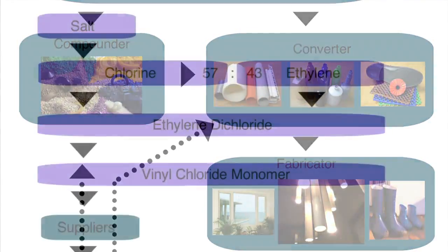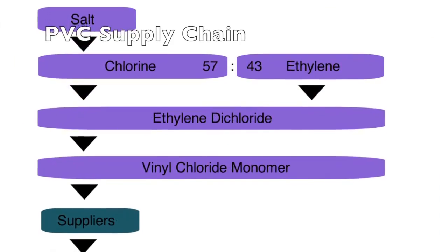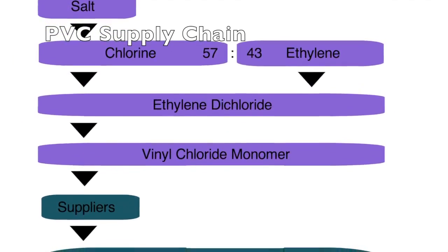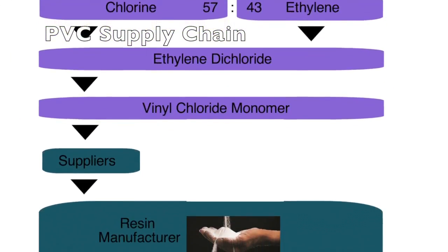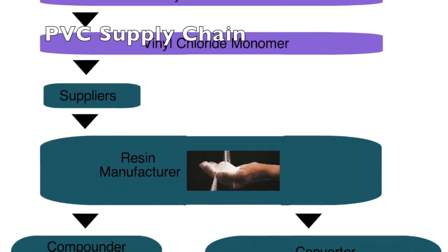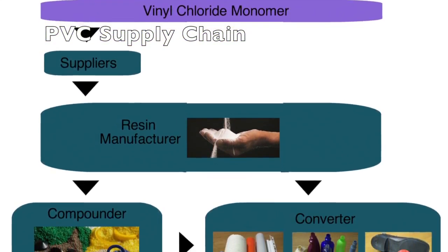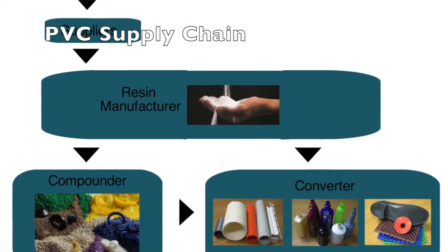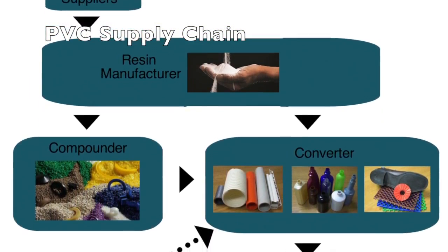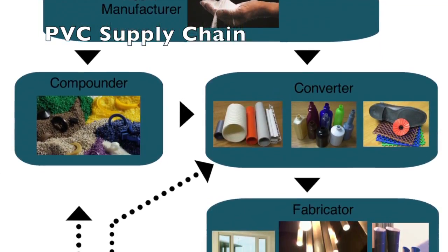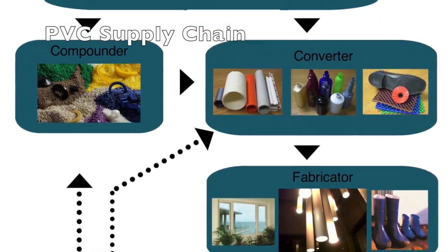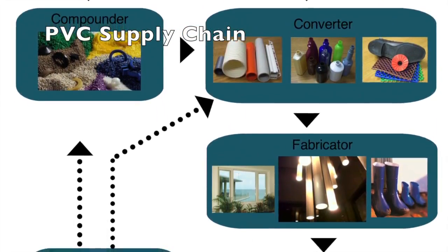Such inclusion of recyclate into new product reduces the embodied energy in that PVC product. Alternatively, these items can be safely disposed of into landfill, however that's not the preferred option.